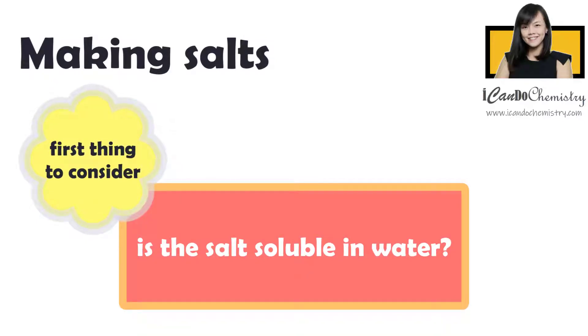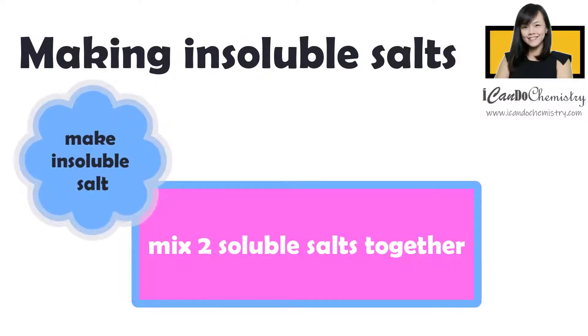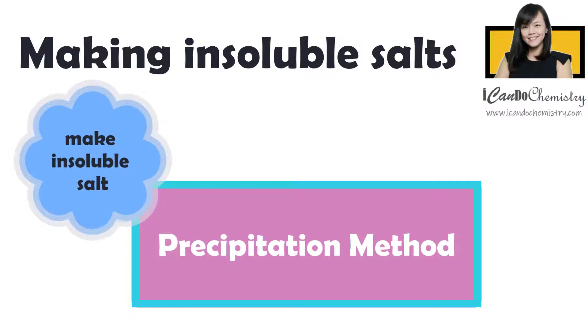When we prepare any salt, the first thing we need to consider is whether it is soluble in water. If the salt we want to make is an insoluble salt, we can form it by mixing two soluble salts together. Now this method is called precipitation method.